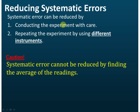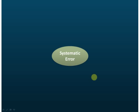This is how we reduce systematic error. One important thing to know: systematic error cannot be reduced by finding the average of readings. If you use the same instrument and measure a few times, then find the average, this method will not reduce the systematic error.